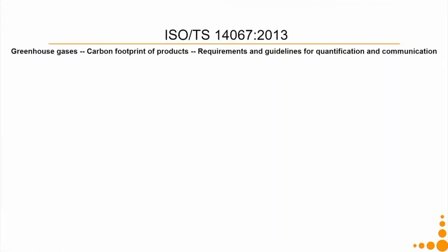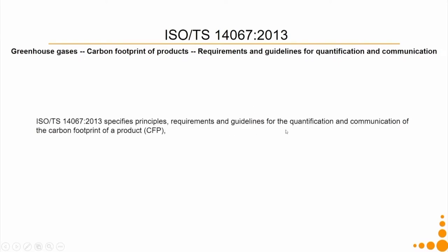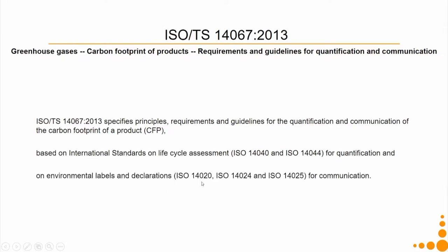There is an ISO standard for calculating the carbon footprint of a product: ISO TS 14067, with the latest version from 2013. It is called 'Greenhouse Gases — Carbon Footprint of Products: Requirements and Guidelines for Quantification and Communication.' It specifies principles, requirements, and guidelines for the quantification and communication of a product's carbon footprint, and is based on international standards on life cycle assessment — specifically ISO 14040 and ISO 14044 — as well as standards on environmental labels and declarations.